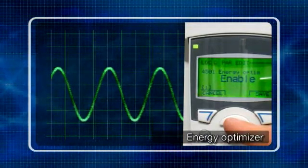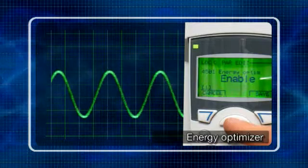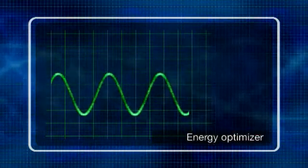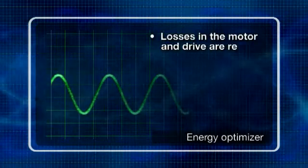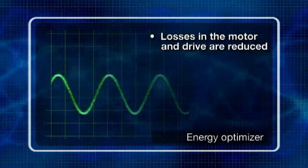With the optimizer switched on, the current seen by the drive now starts to fall gradually. At partial load, the drive reduces the motor magnetizing current, thus reducing the losses of the motor and drive.